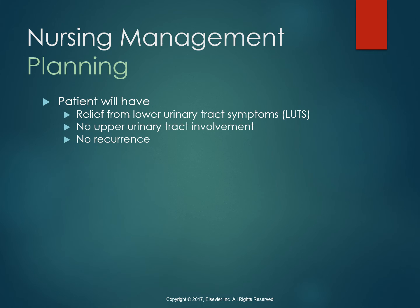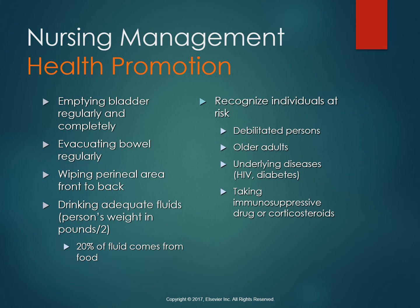Our goal is to have relief of those lower urinary tract symptoms, no upper urinary tract involvement — we don't want it to turn into pyelonephritis — and we don't want any recurrence of the UTI. Health promotion for patients with UTI includes having them empty their bladder completely, reducing complications so there isn't straining, maintaining good hygiene with proper wiping technique, and having good fluid intake to flush bacteria through. A person who is 150 pounds should have about 75 ounces of liquid each day. We also want to recognize individuals who are at risk, such as immunocompromised and older adults.